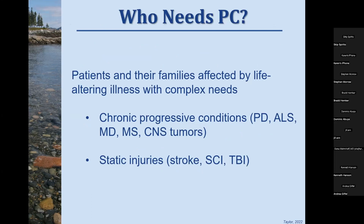The question comes down to who needs palliative care. Patients fall into two categories: those with chronic progressive neurologic conditions such as Parkinson's disease, ALS, muscular dystrophies, MS, and central tumors including spinal cord and brain tumors; and those with static injuries where an inciting event like a stroke or spinal cord injury is followed by lifelong sequelae that we're trying to help manage.